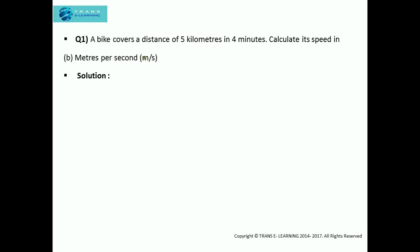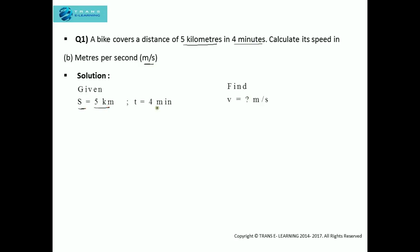The next question: a bike covers a distance of 5 km in 4 minutes. Calculate its speed in m per second. This is the same question — only the units of conversion are different. Given: distance = 5 km, time = 4 minutes. We need to find speed in m per second. The formal step is to write the relation between the higher and lower units.